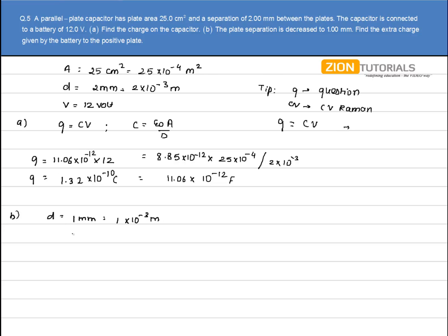With the same voltage and area, the new capacitance is ε₀A/d = 8.85×10⁻¹² × 25×10⁻⁴ / 1×10⁻³, which equals 22.06×10⁻¹² farads.